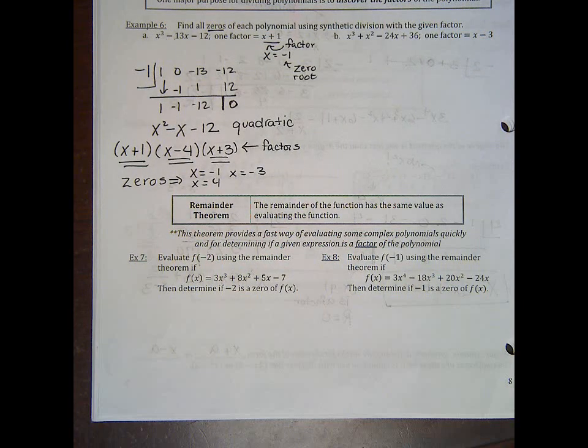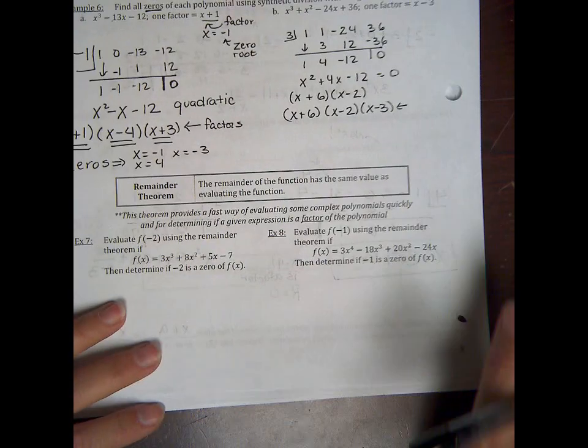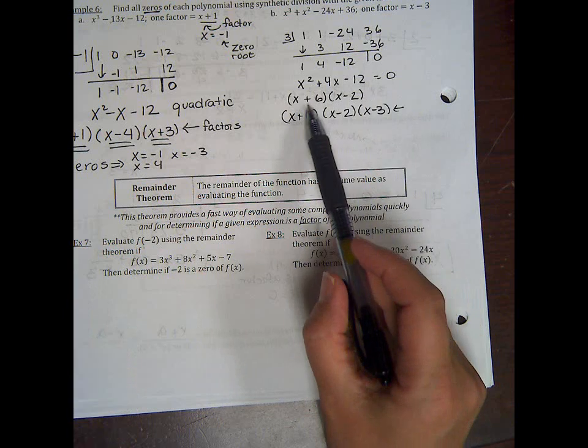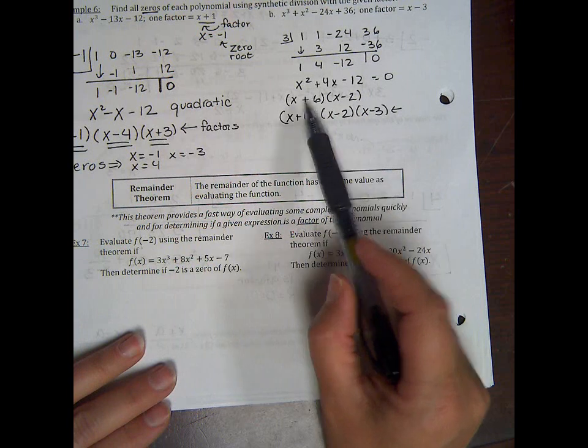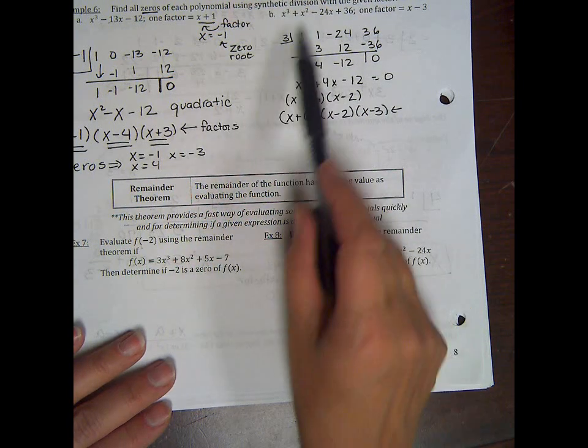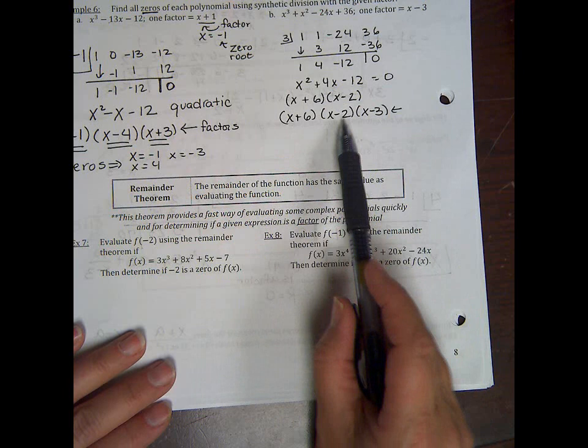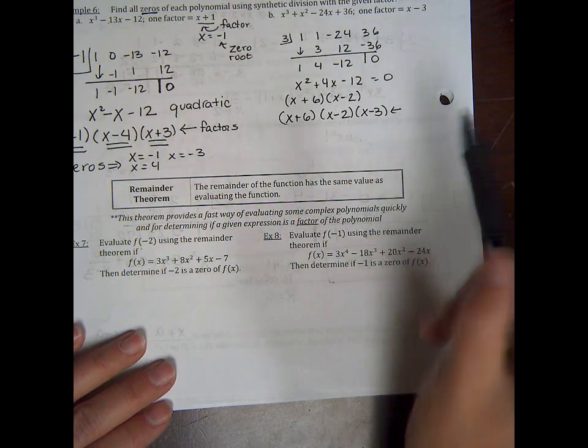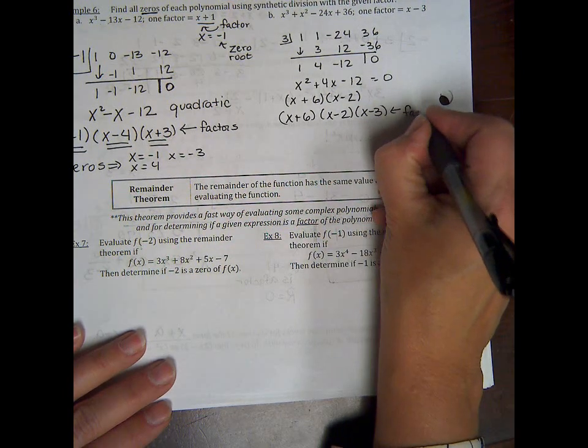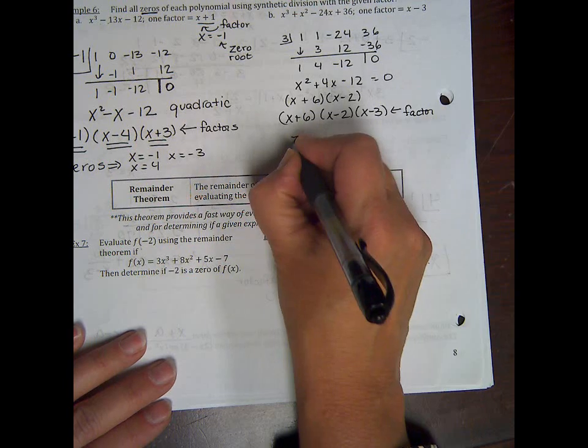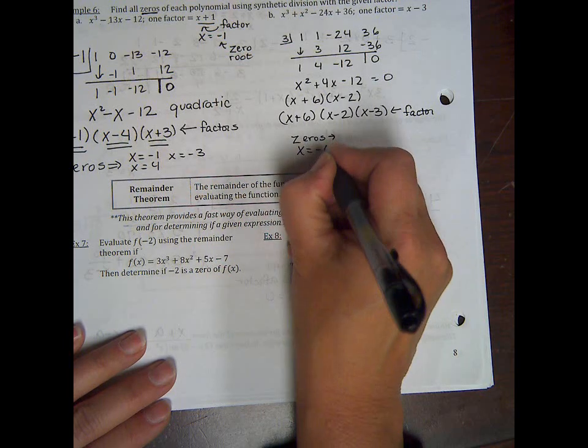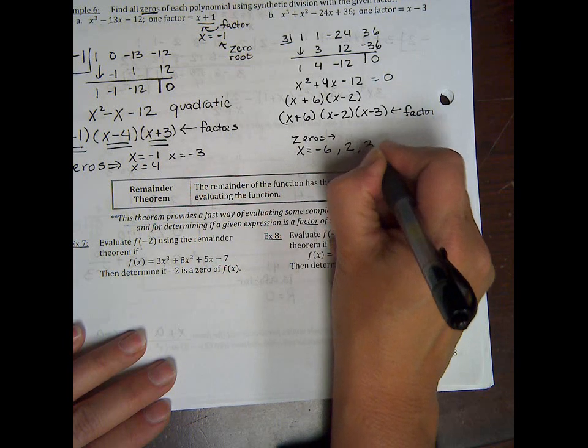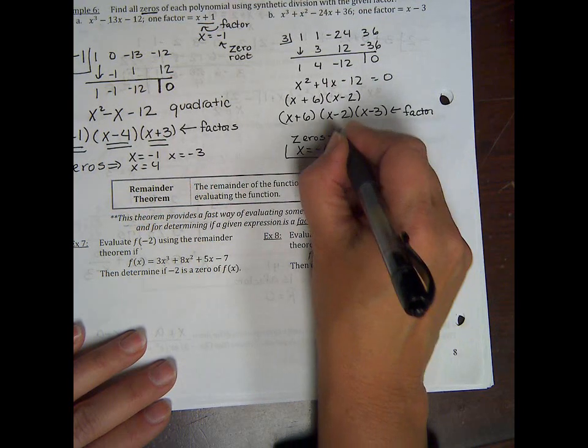Okay, so try B here. Okay, so when I synthetically divided these, I got x squared plus 4x minus 12. I factored that quadratic and got x plus 6 and x minus 2. So remember, this was cubic, so I should have three factors. So I add in the one I was already given. Remember, those are the factors, but I was asked for the zeros. So the zeros would be setting those equal to 0. So it would be negative 6, 2, and positive 3. Make sure you answer the question.